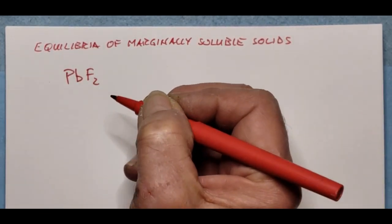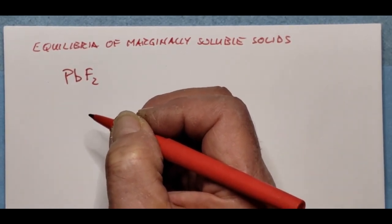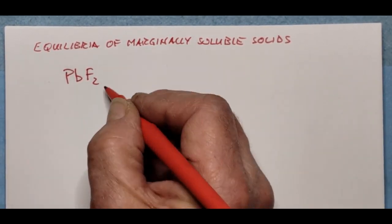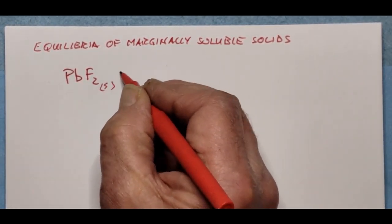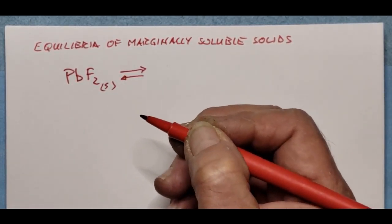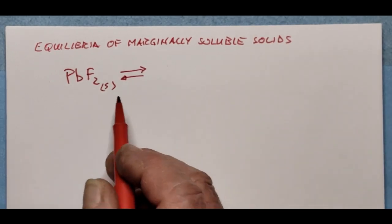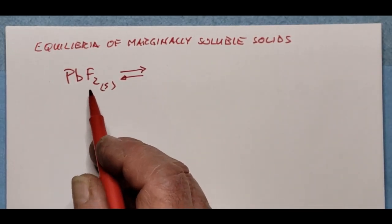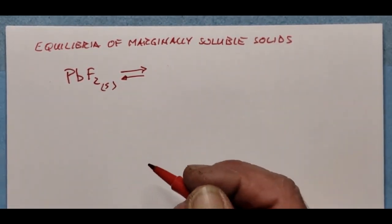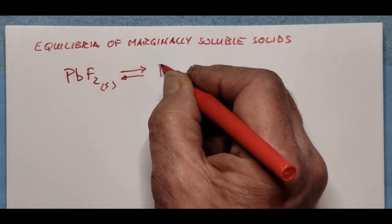Its solubility is so low that for the longest time we couldn't really detect any lead in solutions that might have come in contact with lead fluoride. But as our technology and detection levels got better, we found that marginally soluble solids like lead fluoride or mercury compounds that had long been considered insoluble were actually dissolving at a very, very low concentration.